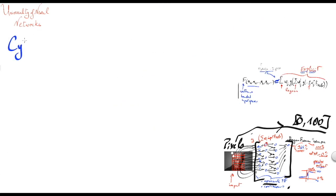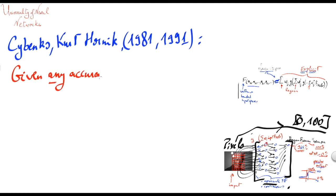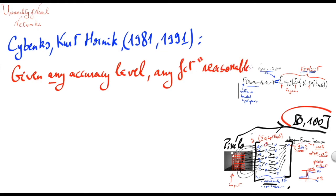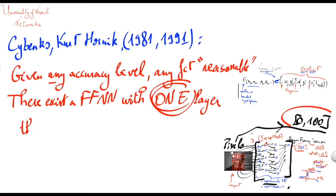And moreover, what people like Sibenko and Kurt Hornik in the late 80s and early 90s is that given any accuracy level, any function, of course a continuous function from a bounded input space to a bounded interval, just to be brief we say any reasonable function, there exists a feedforward neural network with one layer, only one is enough, that approximates f, we call this function f, with that accuracy.